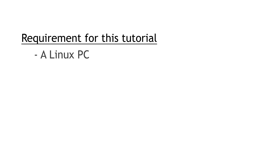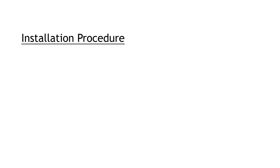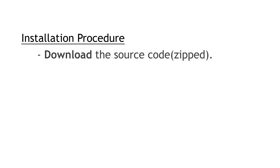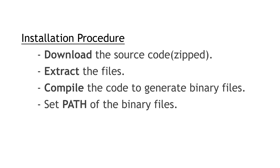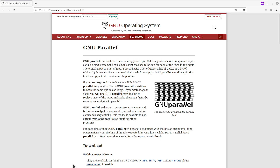Let's get back to the installation. With GNU Parallel, you can install by downloading the source code, then compiling to get your binaries. Or you can also use Anaconda to do the installation. But for this tutorial, I'll show you how to use the source code — we will download the source code, compile, and then execute the binaries.